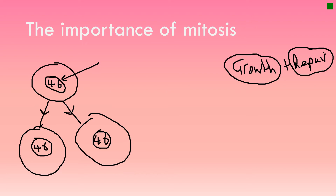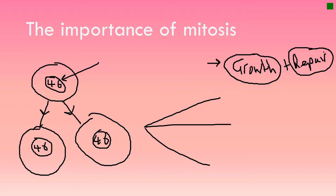Mitosis is specifically related to the copying of chromosomes. There's a different process that happens when the cell actually splits in two, which I will explain. But for the purposes of the first question, the importance of mitosis is for growth and repair. You may use an example of going from one cell to the trillions of cells that we are now in terms of growth. Cells are replacing themselves all the time, and when we talk about repair it could come down to replacing red blood cells.